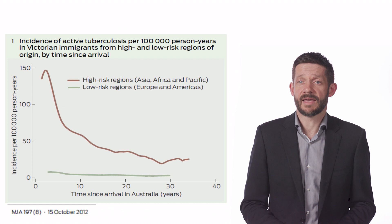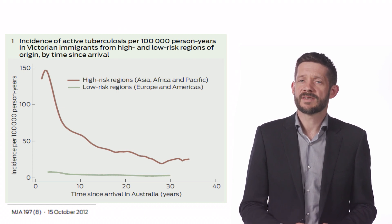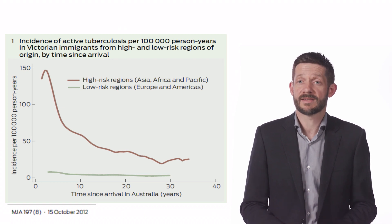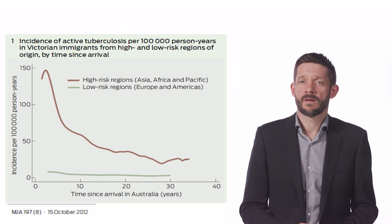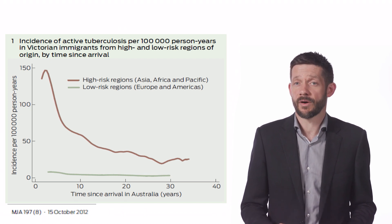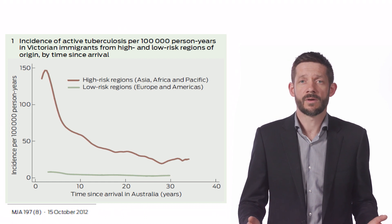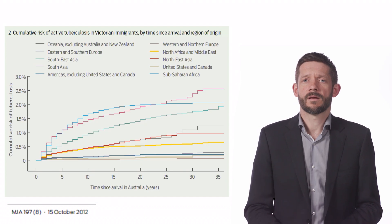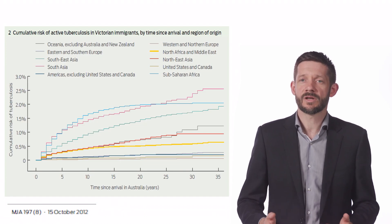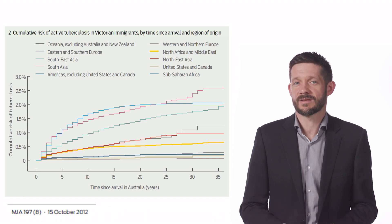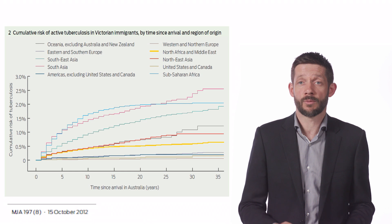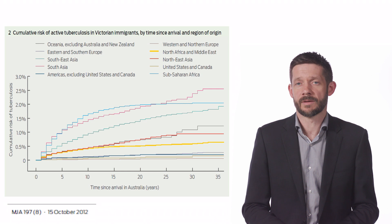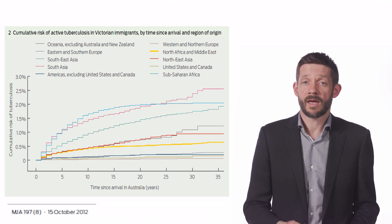If we look at the risk of getting sick with TB after migrating from a high-prevalence country, we can see that the highest risk is in the first few years after arriving, with half of all cases diagnosed in the first six years. That risk continues to stay high lifelong though, and even 30 or 35 years after arrival, people still have significant risk of becoming ill. The cumulative risk of TB continues to rise over decades, and by the time someone migrating from Vietnam or India has been in Australia for 30 years, close to 3% will have developed TB, which is a substantial burden for them and also for the community.